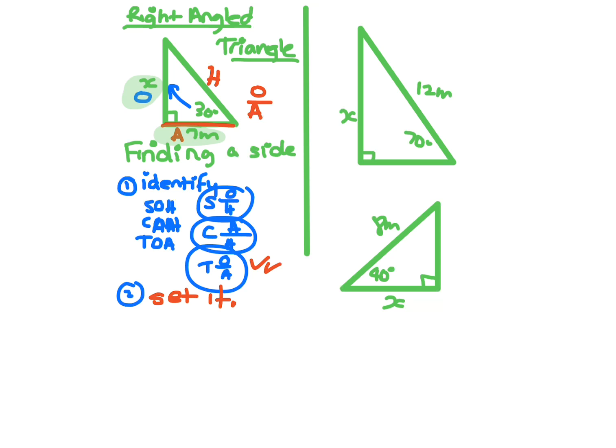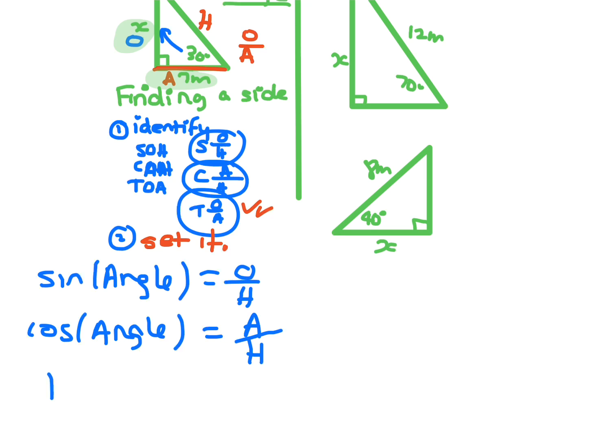So what you're doing is you're writing sine, then whatever the angle is, as opposite on hypotenuse. Cos, and whatever the angle is, adjacent on hypotenuse. And tan, whatever the angle is, that's opposite on adjacent. So in this situation where we've just done this question,